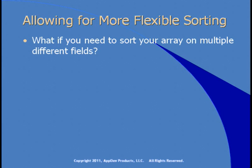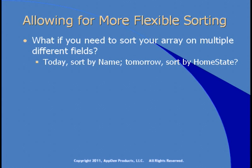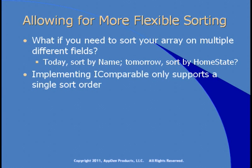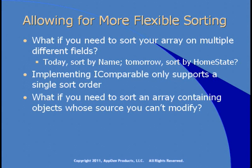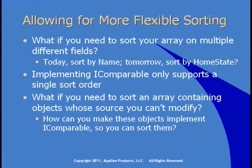What if you need to sort your array on multiple different fields? We sorted on the name field, but you might want to sort today by name and tomorrow by home state. Implementing IComparable only supports a single sort order — you decide at write-time what you want to sort by. What if you need to sort an array containing objects whose source you can't modify, like an array of FileInfo objects? FileInfo doesn't implement IComparable and you can't make it. The answer is you can still sort them, it just requires some extra effort.